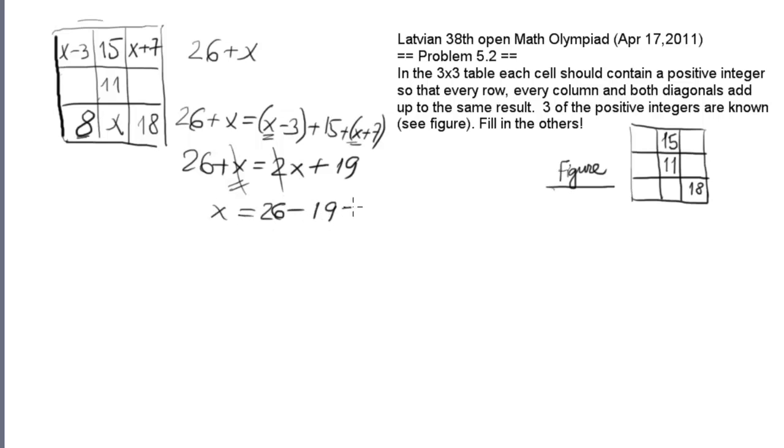These x cancels out with one of these x's, and I'm left with x equals 7, which means that all my sums should be equal to 33. And now let's redraw this once again. So it's now 15, 11, this is 7, then it's 18, 8, this would be 4, 14.